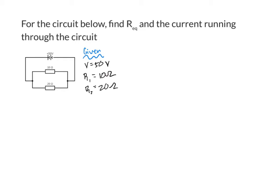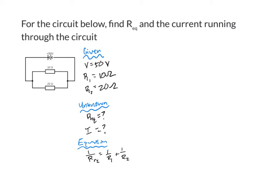Now I'm ready to list out my unknowns. For this problem, I'm trying to find first REQ, and then use that to find my current. So I've got two unknowns, which means I'm going to need two equations, one for each. For a parallel circuit, 1 over REQ is equal to 1 over R1 plus 1 over R2. And then I know that V is equal to I times REQ.